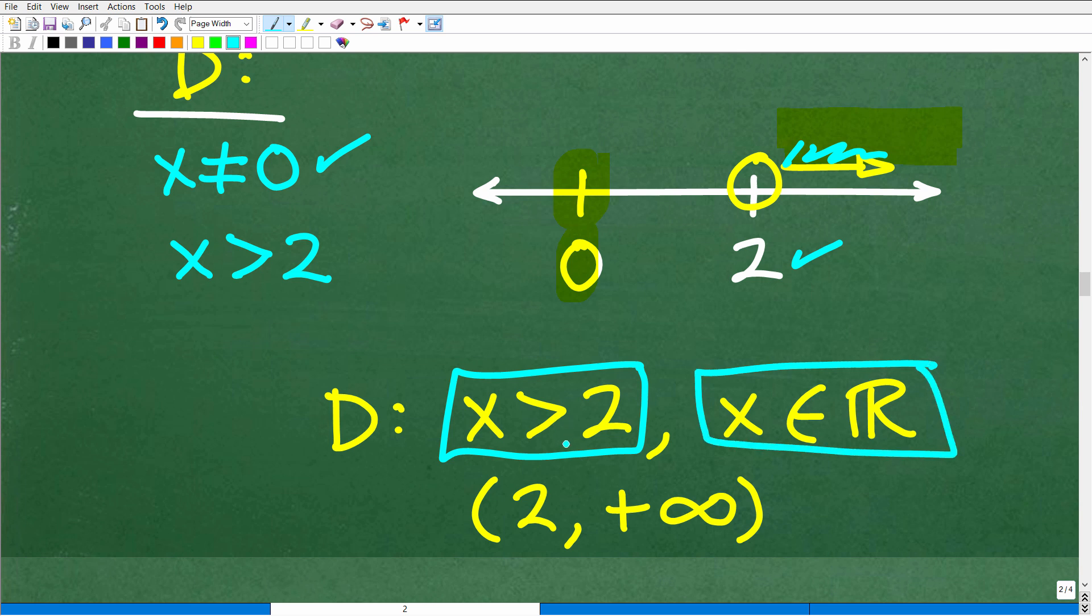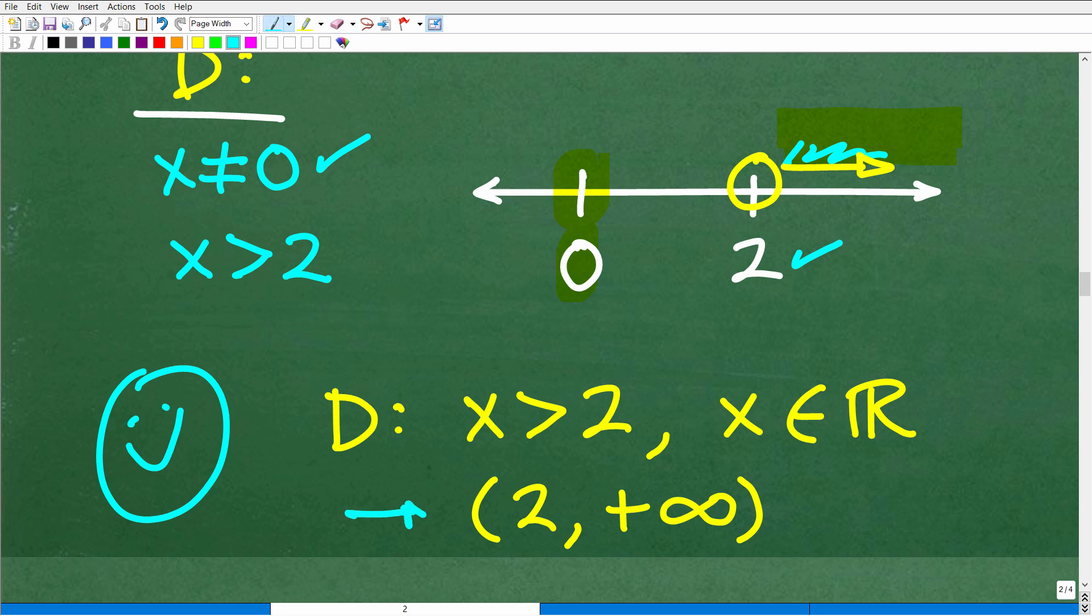And if you want to be extra fancy, you want to use interval notation, which would be open parentheses right here, 2, and these numbers are going towards positive infinity, so it's comma positive infinity. So this is interval notation, which you study generally in algebra 2, might be seeing some of that, definitely at the pre-calculus level.